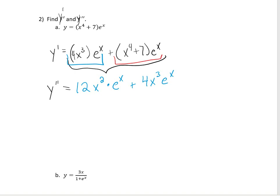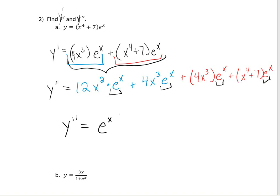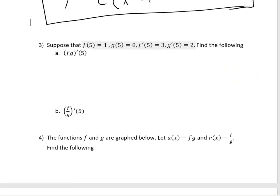Now I want to find the second derivative, which means I need to find the derivative of that first derivative expression. I have to use the product rule again on each piece. The derivative of the first piece is 12x squared times e to the x plus 4x cubed times e to the x. Then using the product rule on the second piece gives 4x cubed times e to the x plus x to the 4th plus 7 times e to the x. Since each piece has e to the x, I can factor it out: e to the x times x to the 4th plus 7 plus 12x squared plus 8x cubed.